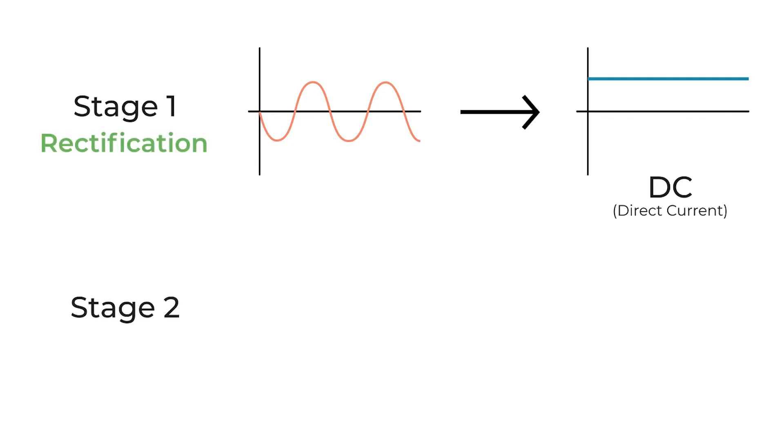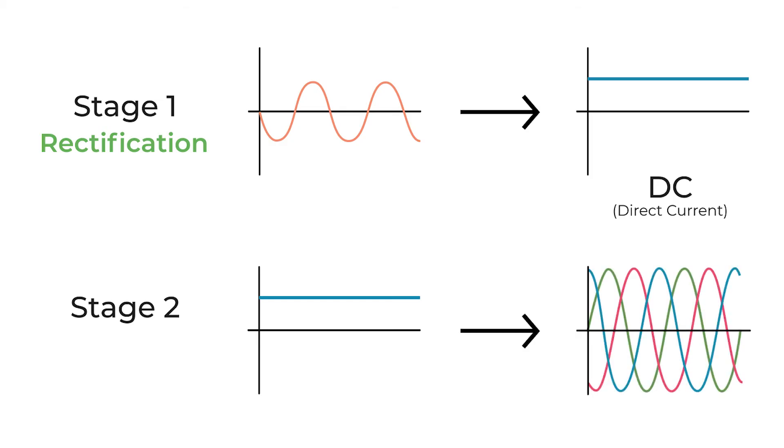The second stage converts the DC electricity into the necessary AC electricity for the machine, known as inversion.